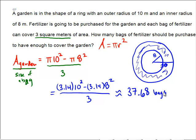But we do need to buy these bags, and you can't buy 0.68 of a bag. So when we go into the store, we're going to have to order a total of 38 bags in order to cover our garden. So that's the answer to this problem.